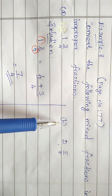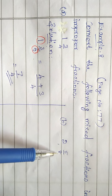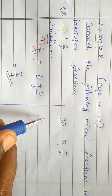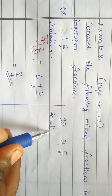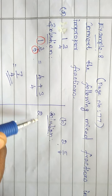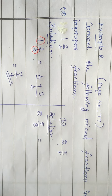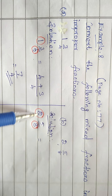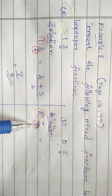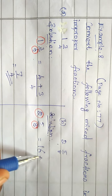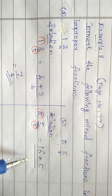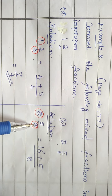Now see the B part, the second question: 2 and 5 by 8. Using the same procedure, I take 2 and 8 and multiply them. 2 eights are 16. Then I add plus 5, divided by the denominator 8. There is no change in the denominator — we write the denominator as it is.